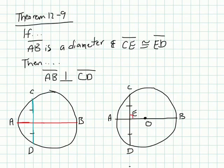Theorem 12.9. So if AB is a diameter, and you have CE, and CE is congruent to ED, then AB and CD are perpendicular to each other. It's kind of the converse of what we just learned.